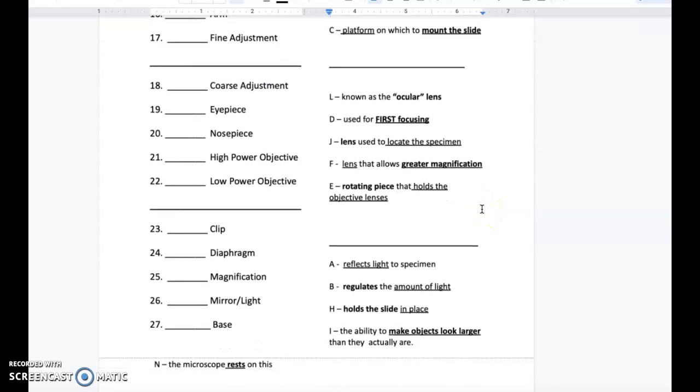Now we're on the next section. We're going to read the definitions first. Letter L: known as the ocular lens. Letter D: used for first focusing. Letter J: lens used to locate the specimen. Letter F: lens that allows greater magnification. Letter E: rotating piece that holds the objective lens.